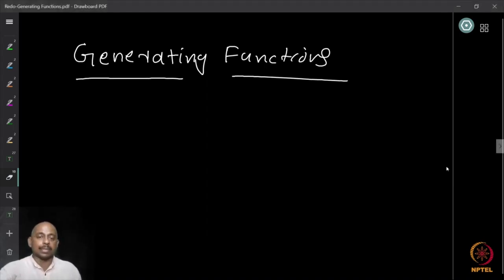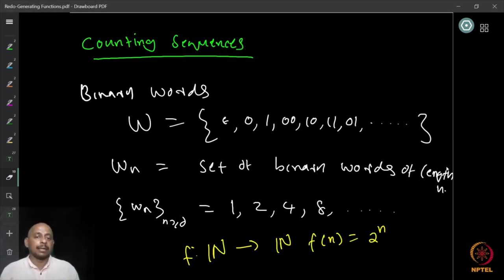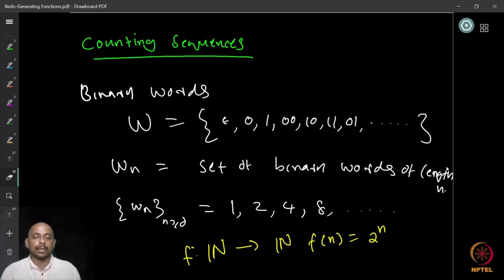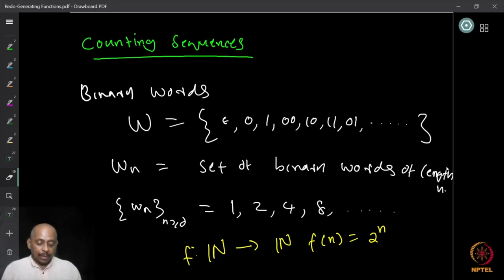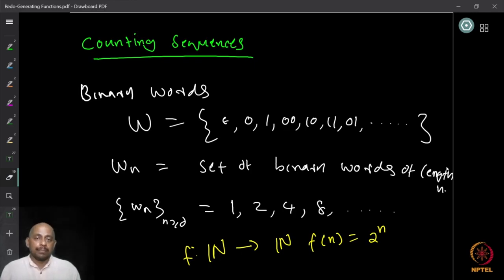So let us first look at what counting sequences are. A sequence is a function from the set of natural numbers to, say, real numbers or natural numbers. Basically, for every natural number including zero — zero, one, two, etc. — we can associate a number, and that defines a sequence. For example, here is a sequence: one, two, four, eight, etc.